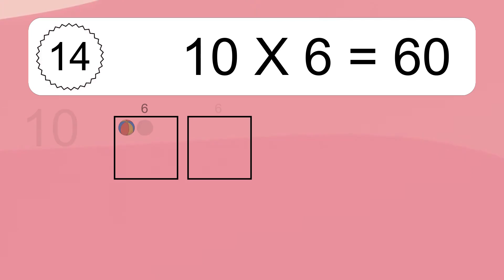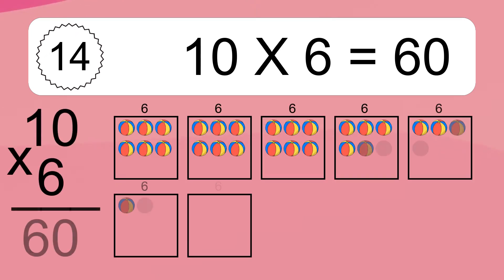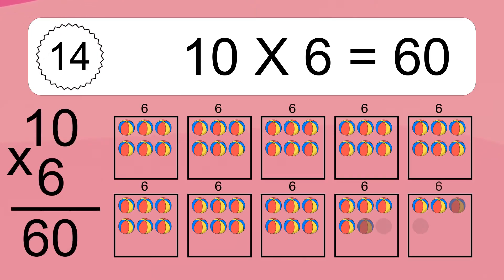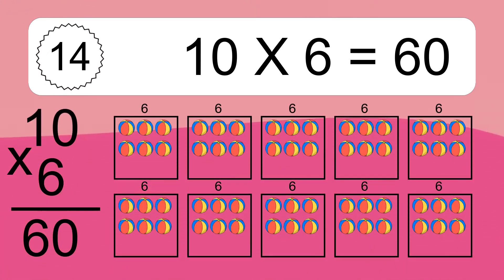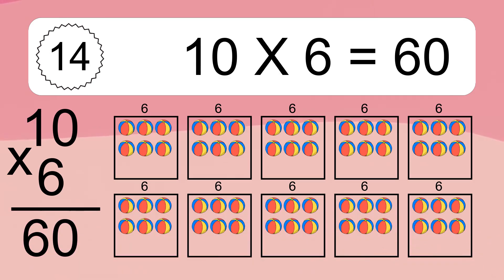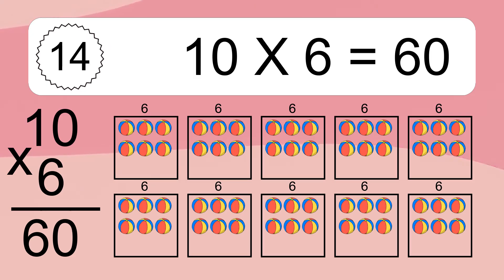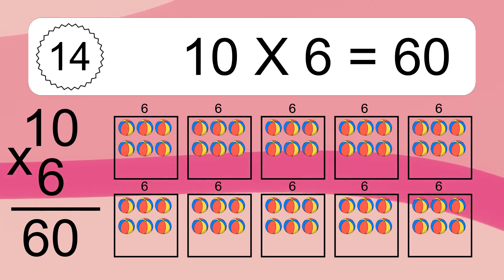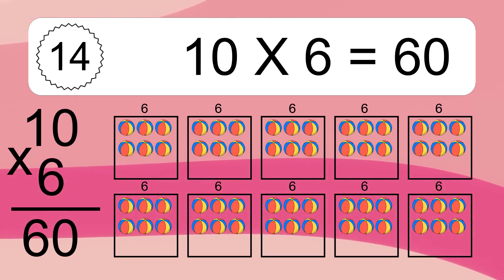Ten times six equals what? Ten times six equals 60. We have 10 boxes, and each box has six colorful balls inside. If you count all the balls in all the boxes together, you will have ten times six balls. This equals 60 balls.